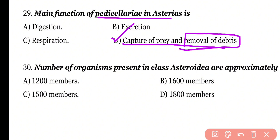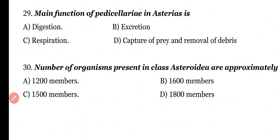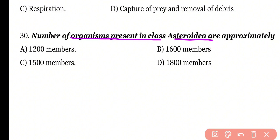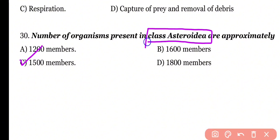Question 30: The number of organisms present in class Ophiuroidea are approximately 1,200, 1,600, 1,500, or 1,800 members? Correct answer is Option C. Almost 1,500 organisms are present in class Ophiuroidea.